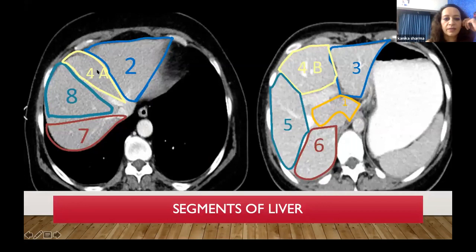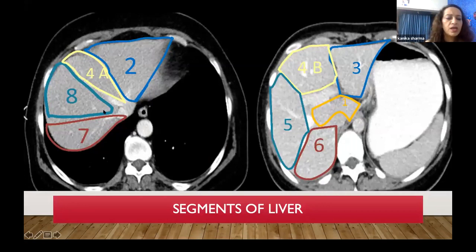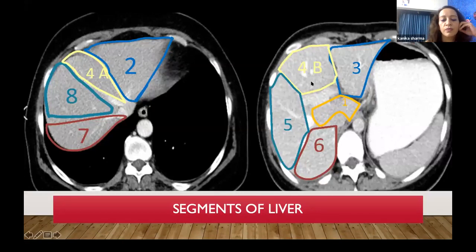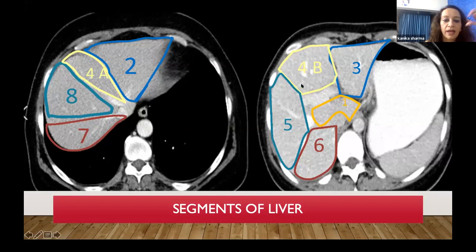On axial anatomy, this is how the segments appear. Usually there is no requirement to contour segments separately, but when drawing contours for gallbladder you must be aware where segment 4 is, as it tends to be included in the tumor bed volume. Additionally, radiologists will always mention segments in their reports, so you must know where the tumor has been anatomically described in relation to segmental anatomy.